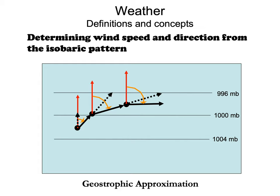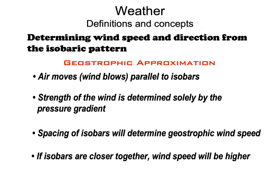We call this the geostrophic approximation, and it's a pretty good approximation of wind speed in the atmosphere. The wind blows parallel to the isobars. The strength of the wind is determined solely by the pressure gradient — how close the isobars are together. If isobars are closer together, wind speed will be higher; if farther apart, wind speed will be less.